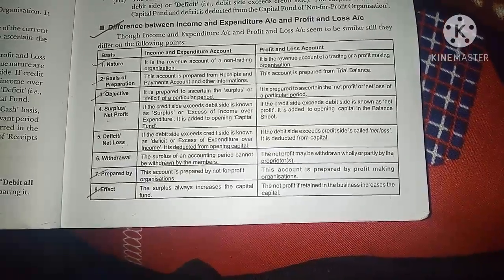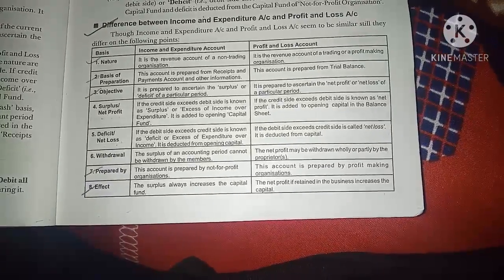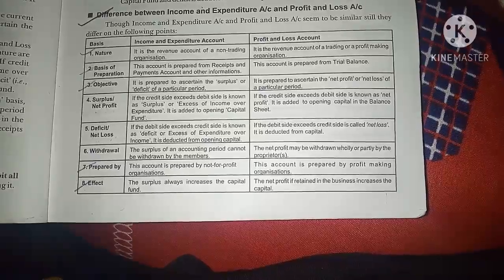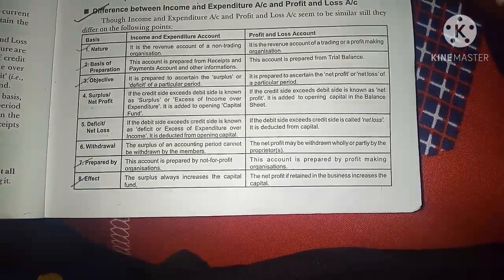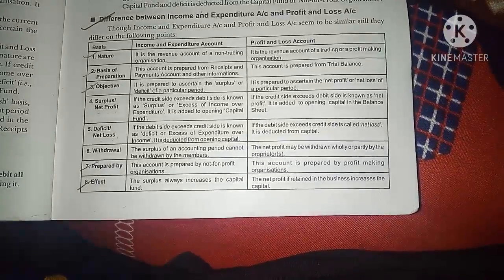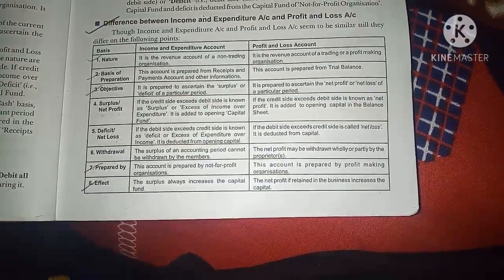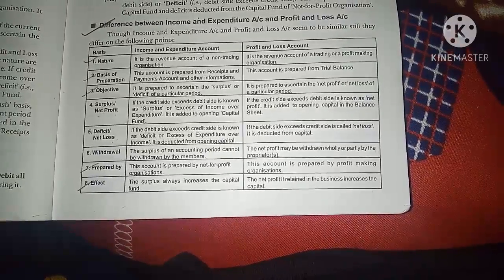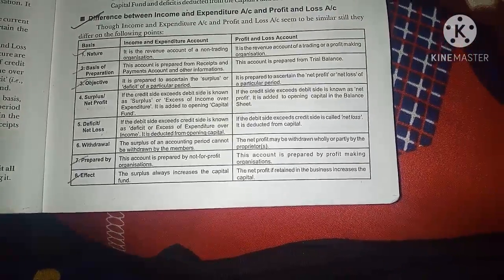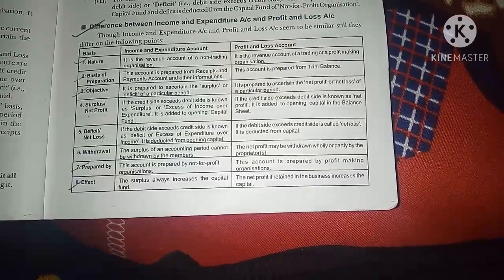The income and expenditure account is the revenue account of a non-trading organization. We prepare it from the receipts and payments account, while the profit and loss account is prepared from the trial balance. The income and expenditure account calculates surplus and deficit, whereas the profit and loss account shows net profit or net loss. When profit comes, it is called surplus; when there is a loss, it is called deficit.